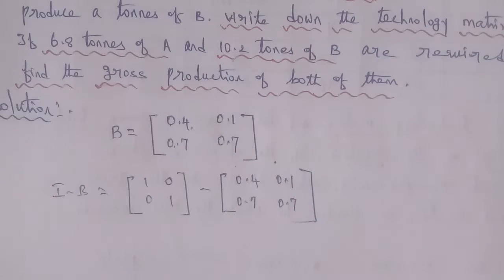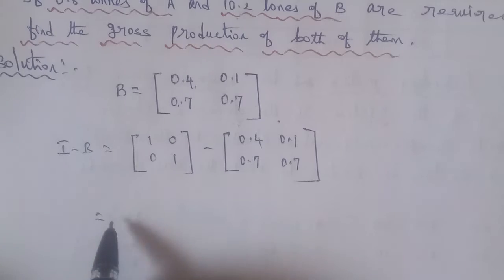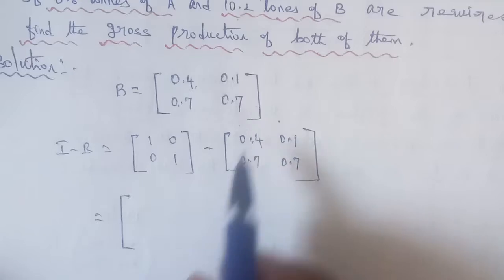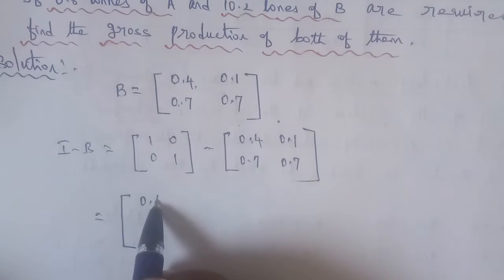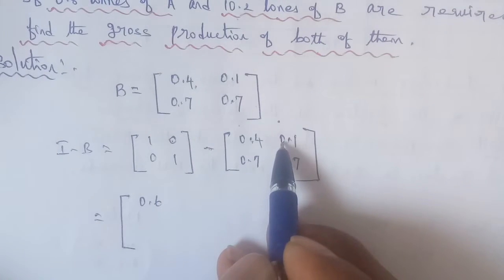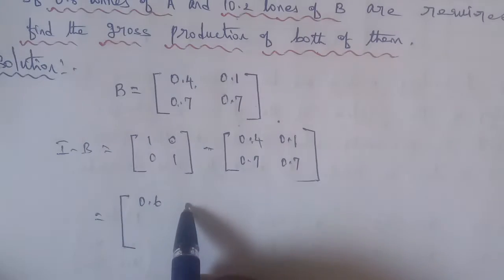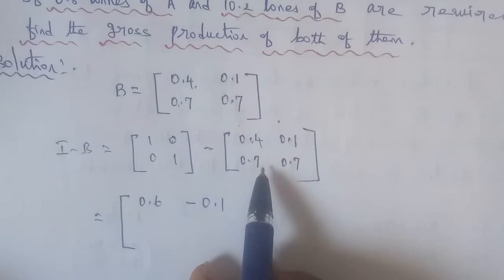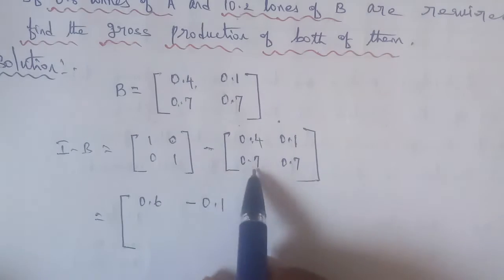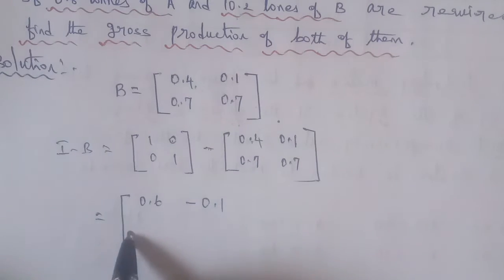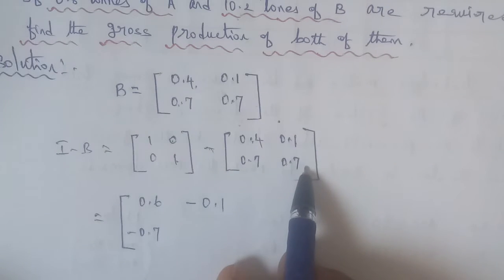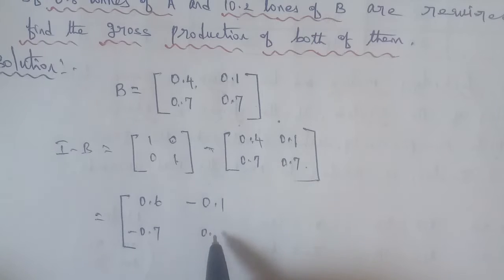Now computing I minus B: the diagonal entries become 1 minus 0.4 = 0.6 and 1 minus 0.7 = 0.3. The off-diagonal entries are 0 minus 0.1 = −0.1 and 0 minus 0.7 = −0.7. So the matrix I minus B is: [0.6, −0.1; −0.7, 0.3].